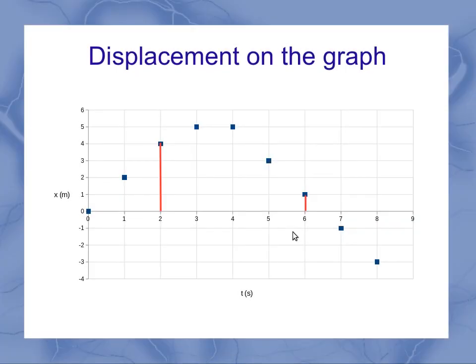If we look at displacement on the graph, we recognize that, again, we have to specify certain end points for our time. What time span are we talking about? Because displacement is the change in position between two different times.